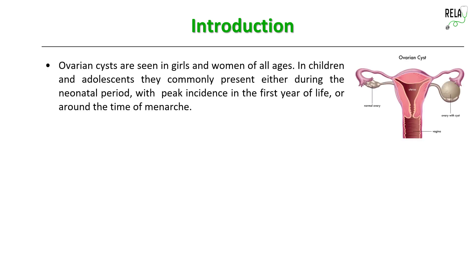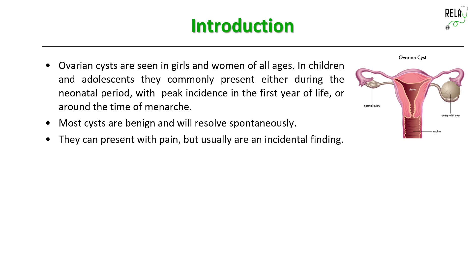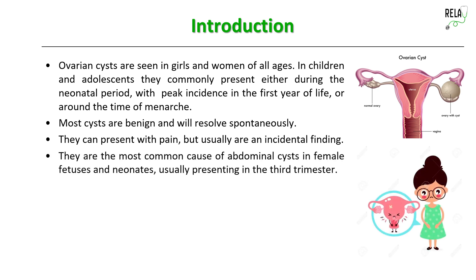Ovarian cysts are seen in girls and women of all ages. In children and adolescents, they commonly present either during the neonatal period — with peak incidence in the first year of life — or around the time of menarche. Most cysts are benign and will resolve spontaneously. They can present with pain but usually are an incidental finding. They are the most common cause of abdominal cysts in female fetuses and neonates.